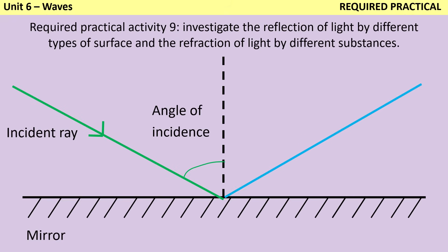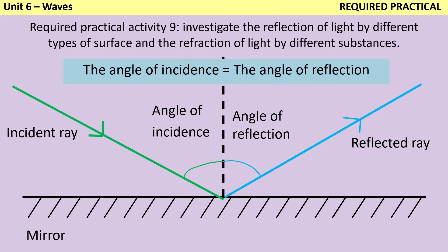Then we can draw in the reflected ray, and the angle of reflection. And the key thing here is that when we've got a smooth flat surface, the angle of incidence is going to be equal to the angle of reflection.